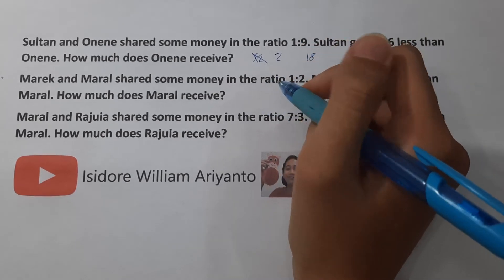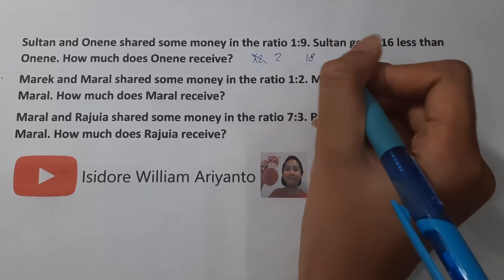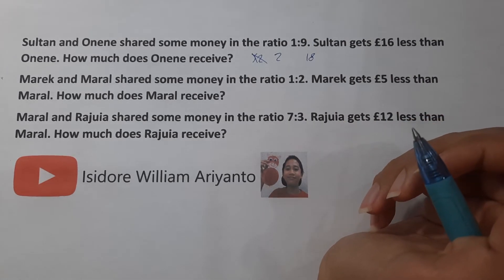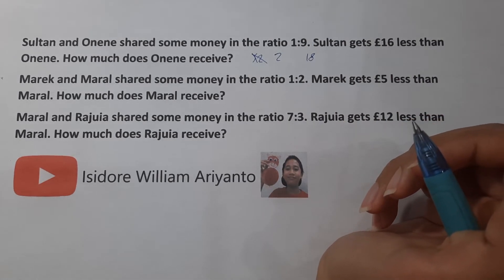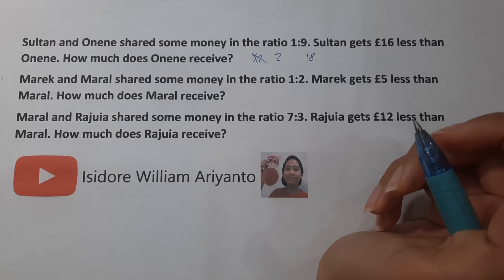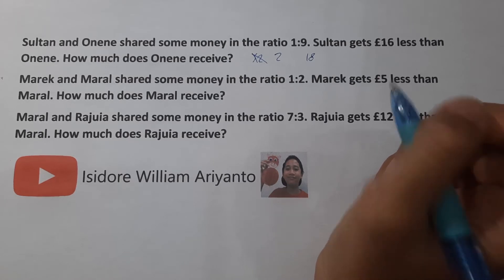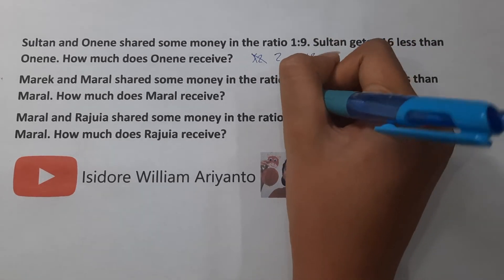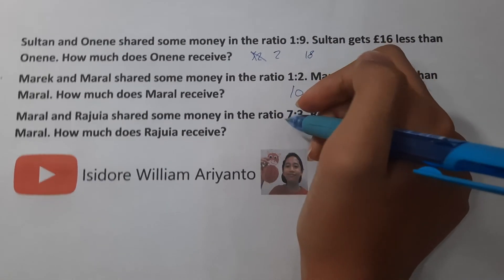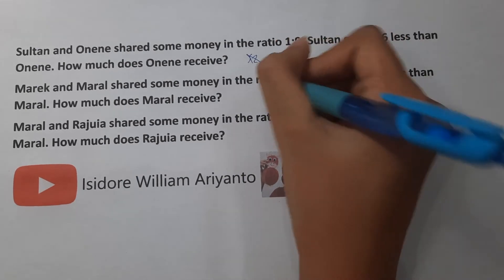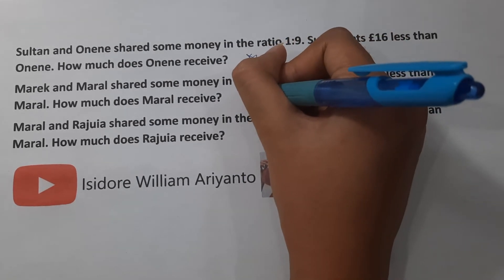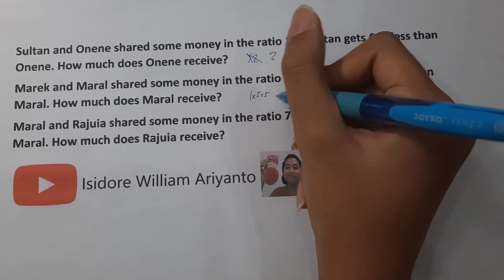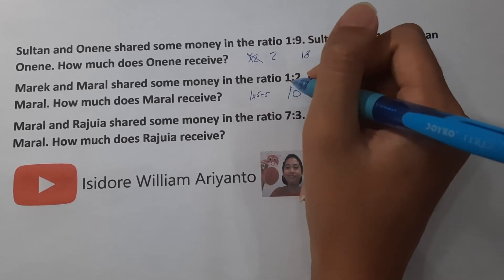Marek and Maral share some money in the ratio of 1:12. Marek gets 5 pounds less than Maral. How much does Maral receive? 5 pounds less — can be 10, 10 pounds. Because 1 times 5 equals 5, and that will equal to 5 pounds less. Or you can just add them.